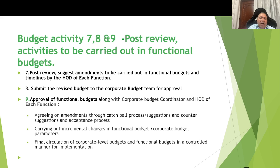Activities seven, eight, and nine are also common. Post-review of the respective budgets by the HODs, any amendments needed are carried out in the budget prepared by the operating team. Once reviewed by the HOD, these are submitted to the corporate budget team for approval. Approval of the functional budget is done along with the corporate budget coordinator and the HOD of each function through a catchball process — where the HOD and corporate coordinator each suggest positions and mutually agree on a set of parameters or targets. This is followed by incremental changes in the functional budget and final circulation of corporate and functional budgets in a controlled manner. The CEO or MD can also participate in this process.